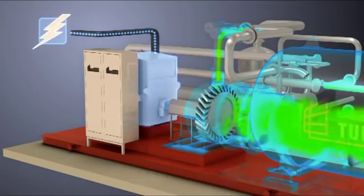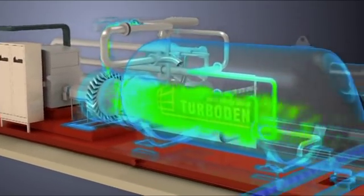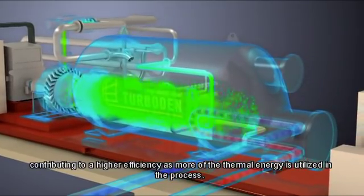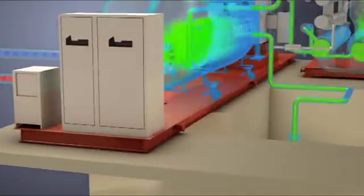Downstream of the turbine, the vapor contributes to preheating the organic liquid in the regenerator, contributing to a higher efficiency as more of the thermal energy is utilized in the process.